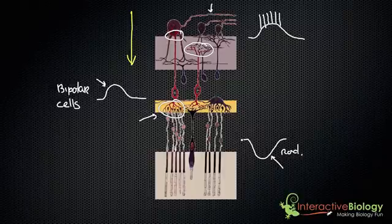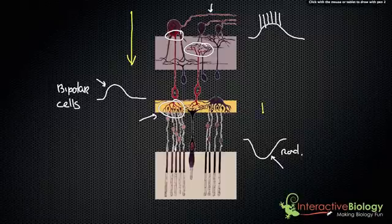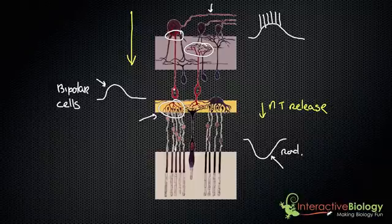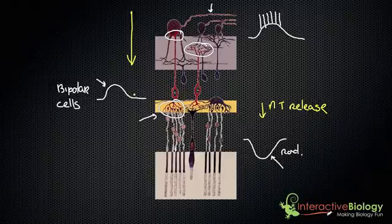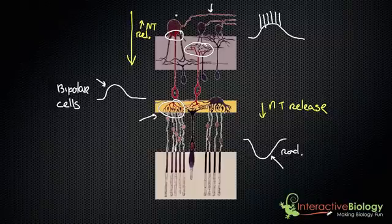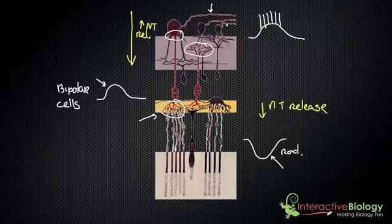So let's look at that again. In response to light, the rod hyperpolarizes — we looked at the process as to how that happens. That reduces neurotransmitter release — there's a decrease in neurotransmitter release. Those neurotransmitters are normally inhibiting the bipolar cells, but now they are no longer being inhibited. They depolarize, causing an increase in neurotransmitter release to the ganglion cells, stimulating them and causing a burst of impulses. The final result is that these ganglion cells fire a burst of nerve impulses that are sent to the brain.